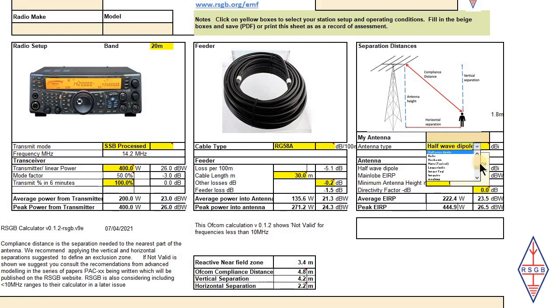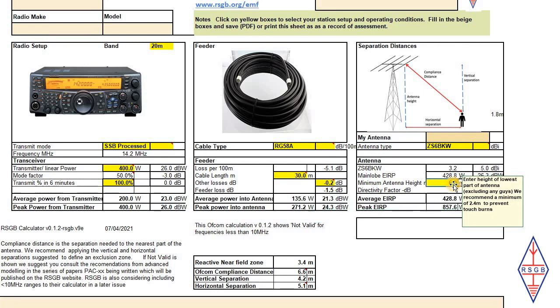Another thing that I could have done is to change the antenna type. One I've actually got up at the garden at the moment is a ZS6BKW, this has even more gain. So now, even if I enter the true height of my antenna, which is 10 meters, I'm still compliant. So at 400 watts, transmitting all the time in a 6-minute period, using SSB processed with 30 meters of feeder, the ZS6BKW antenna with some gain, a 10 meter mast, then I am still compliant, because nowhere at ground level can a person get within the compliant distance of the antenna.